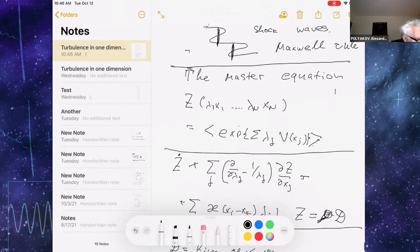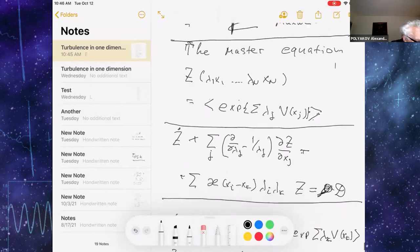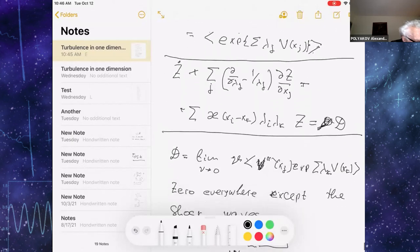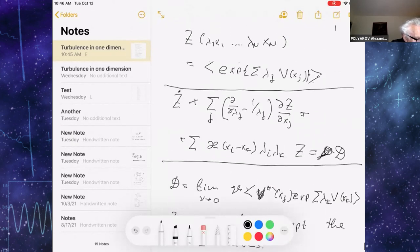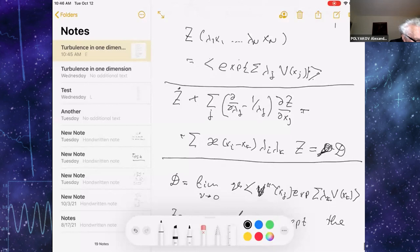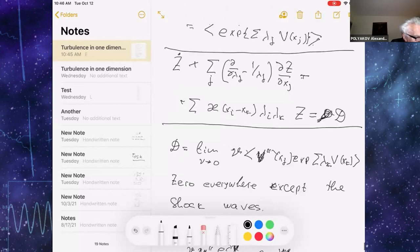To what extent this model can be solved? I don't have time to explain it, but you can derive the master equation for the correlation function of this type. So you have velocities, lambda subparameters, and you have the correlation function of this type. And there is a quite remarkable fact that you can write down the master equation for this quantity.